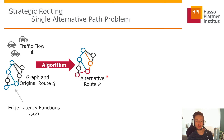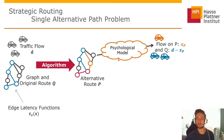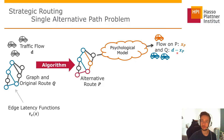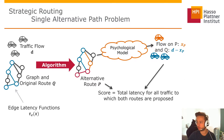This alternative route P can be put into a psychological model, which describes like a black box how many drivers are going to switch from the original route to the alternative route. This will be given by the value X_P, and implicitly, since there are D drivers in total, D minus X_P drivers will stay on the original route. We just assume the psychological model is a black box telling us how many people will use the alternative route.